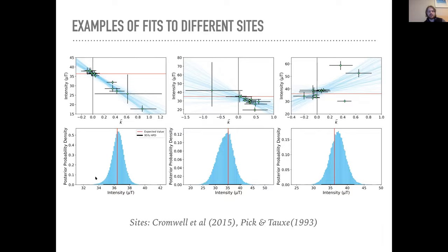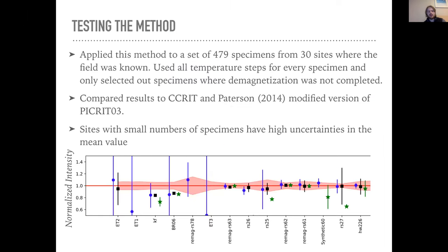These probability distributions are derived through a Monte Carlo method — the lines are sampled from the probability distribution, and enough samples approximate the full distribution. That's what these histograms show. The black bars are 95% credible intervals, corresponding to the 2.5th and 97.5th percentiles of the samples. So basically, without excluding data, we can get these probability distributions that are approximately unbiased.